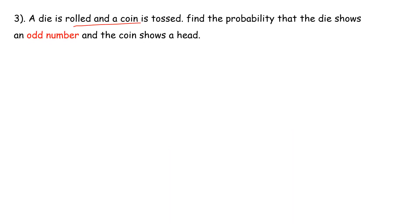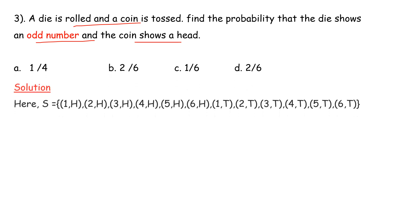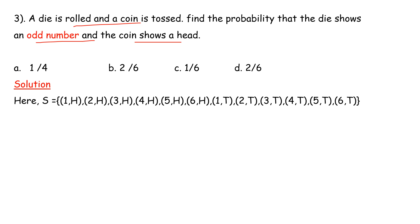Next problem: a die is rolled and a coin is tossed. Find the probability that the die shows an odd number and the coin shows a head. A die has 6 faces, and the coin has one head outcome.